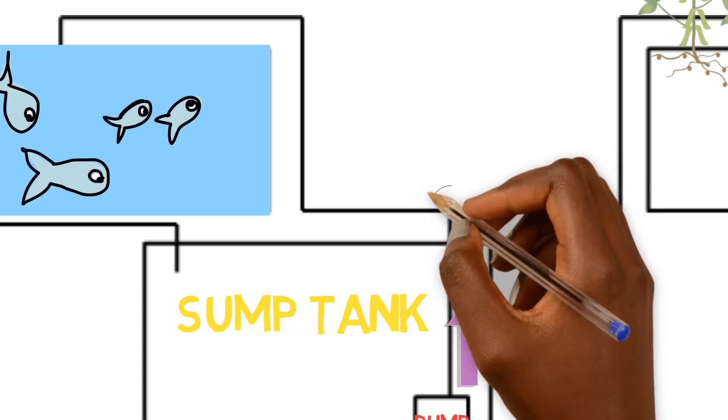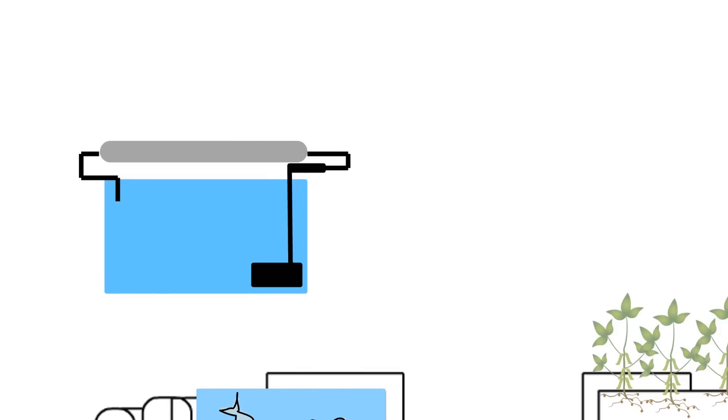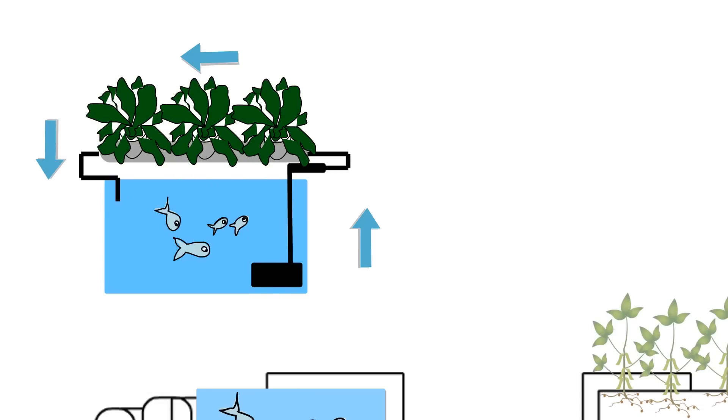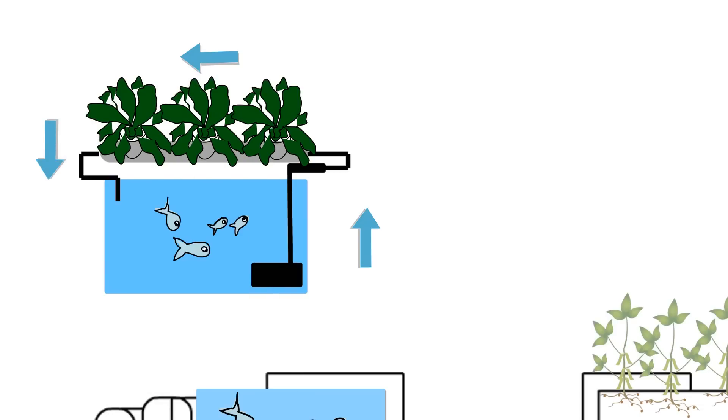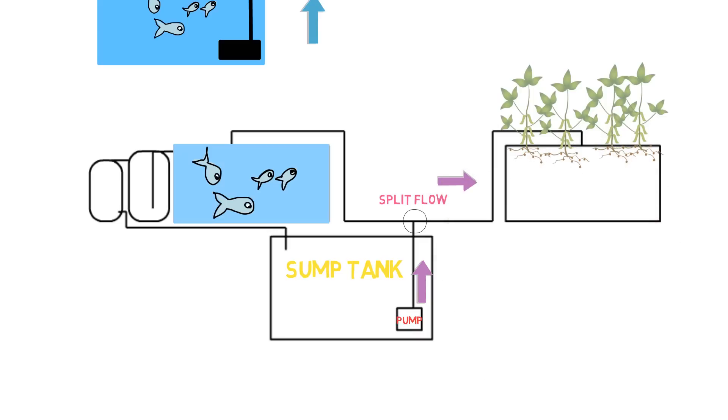From here the pump is going to distribute the water up, and then what we're going to do is split our flow. In regular basic systems it's kind of like a circular motion where it just goes in one direction, but in advanced systems you're going to split the flow. We're going to have one flow going to the vegetable or the growing area.